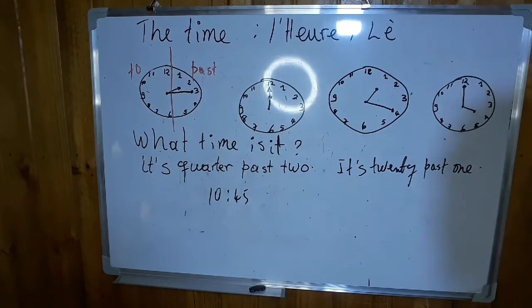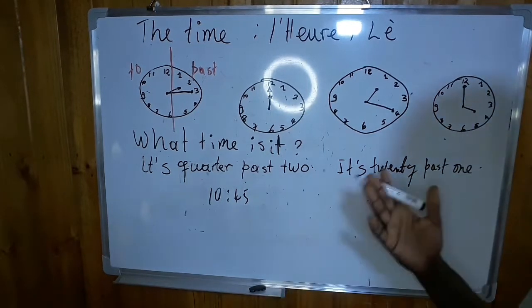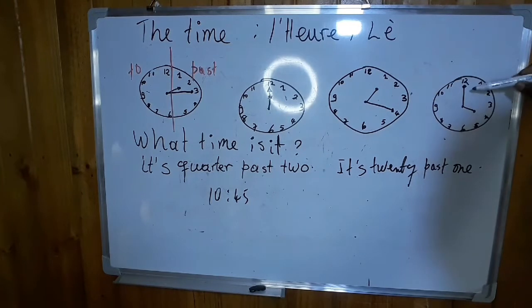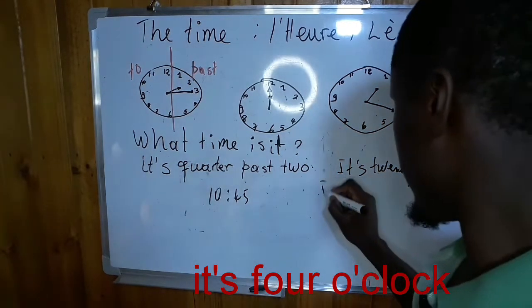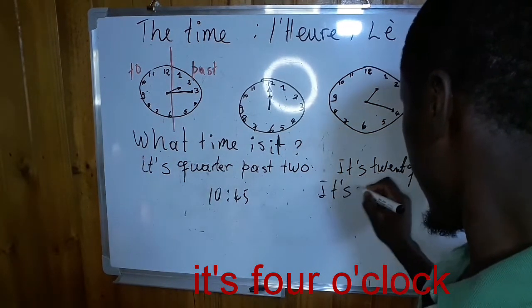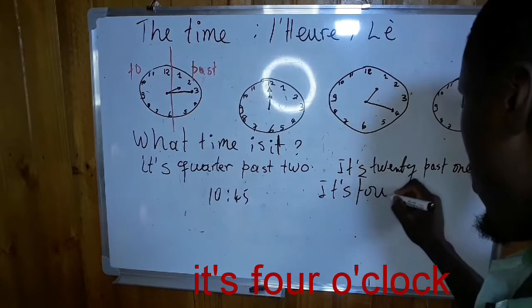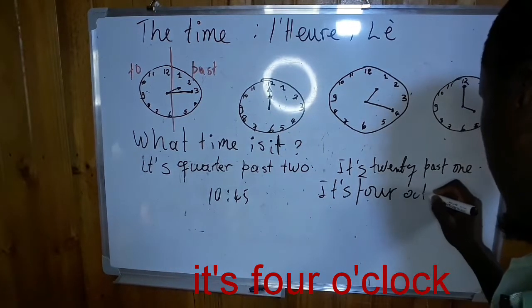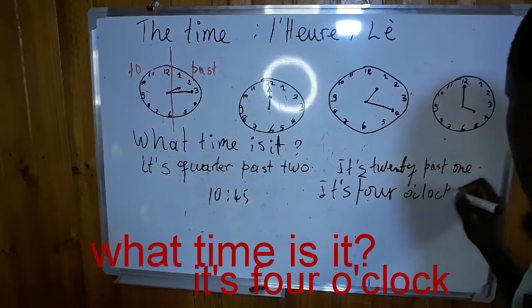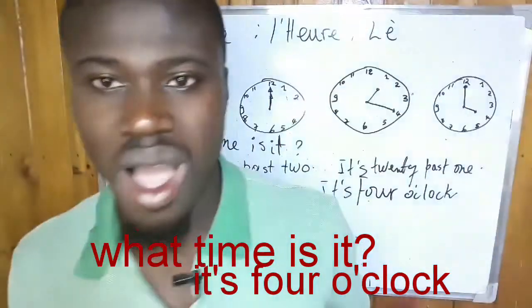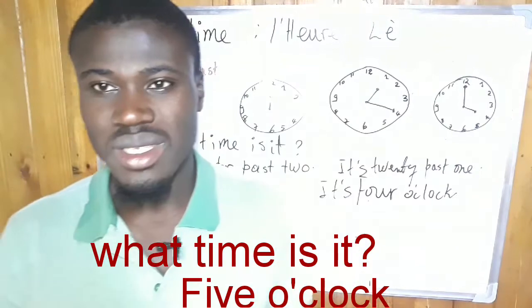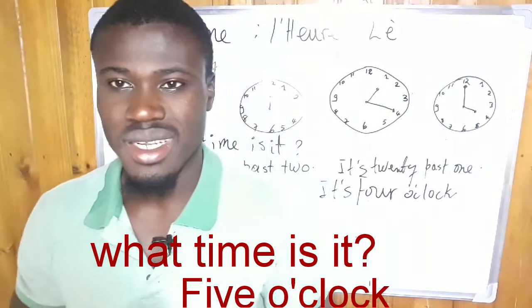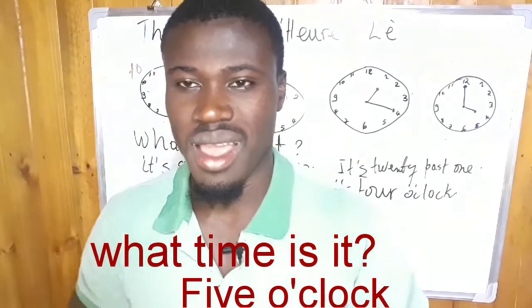If the clock is exactly at 4 — what time is it? It is 4 o'clock. What time is it? It's 5 — it's 5 o'clock.